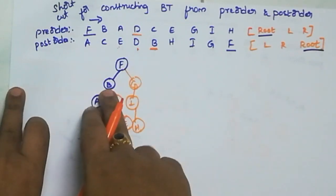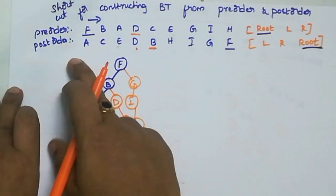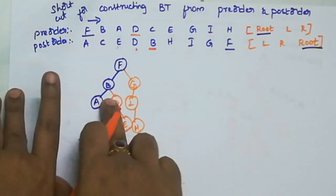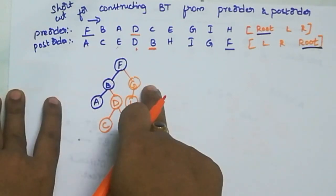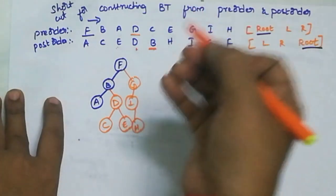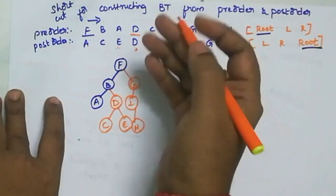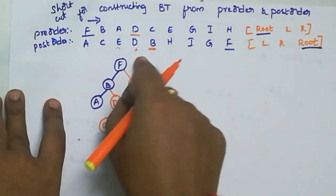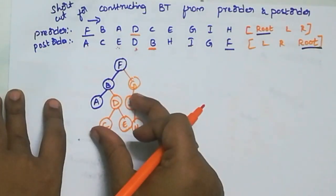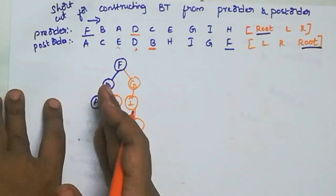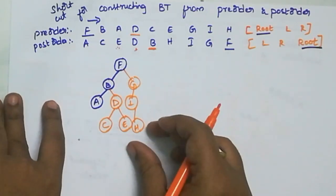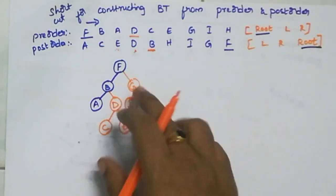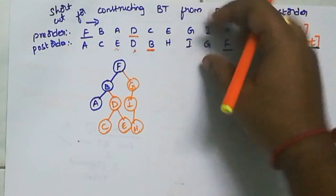First thing manam chuskoali - root element is F. Pre-order lo element search chesthu veltham, post-order lo check chestham. Prati root element ke adhi left undondha, right undondha ani chustham. Left already one element allot ai undhi, so then moving to right element. Left ki first preference, but if left is allotted, then moving to right. Same idhe binary tree ki preorder and post-order raasthi, same idhe series ni ki construction chestham. Thank you.